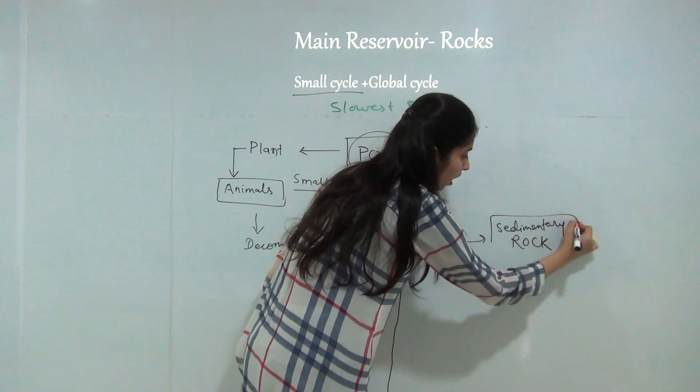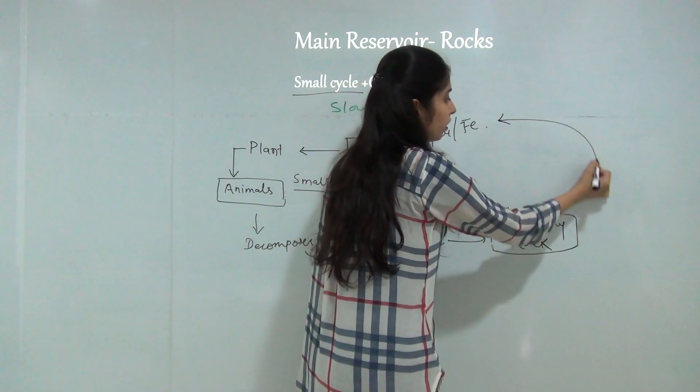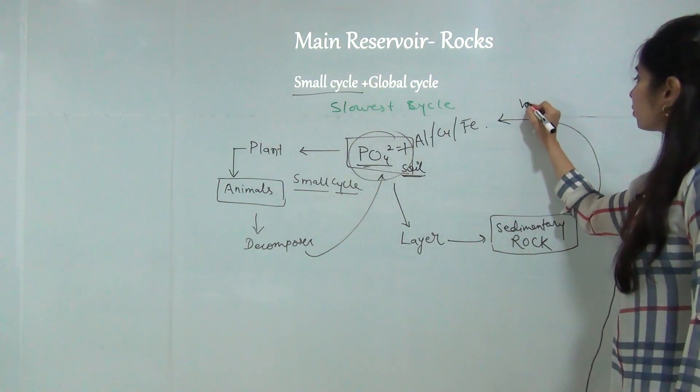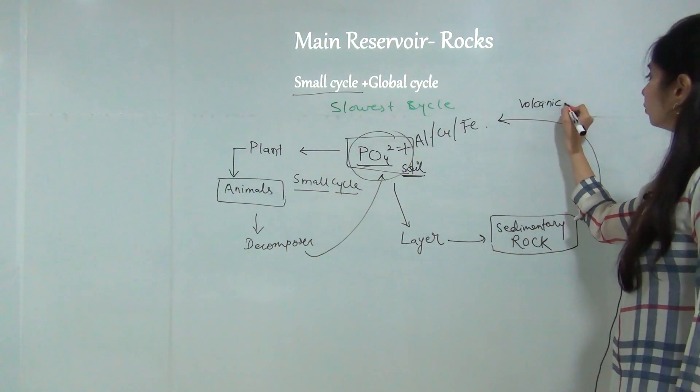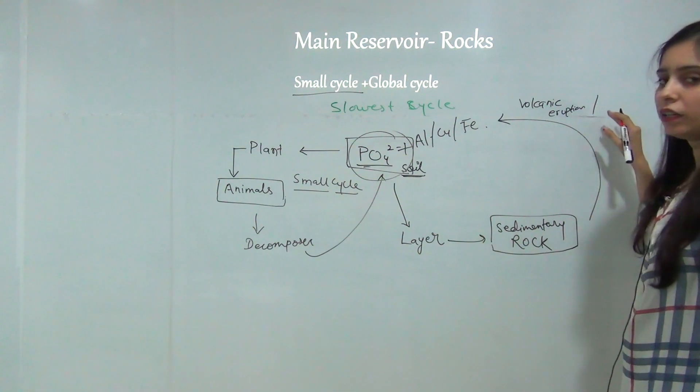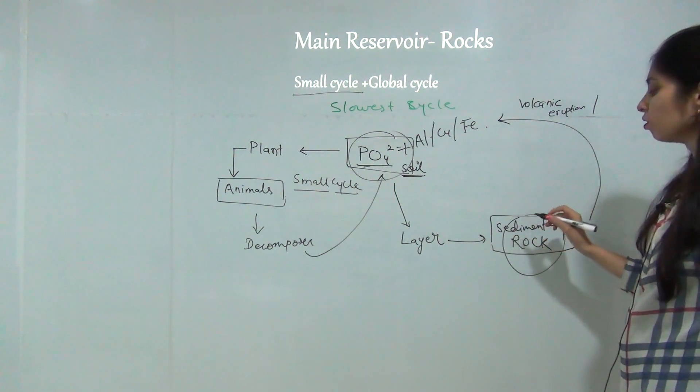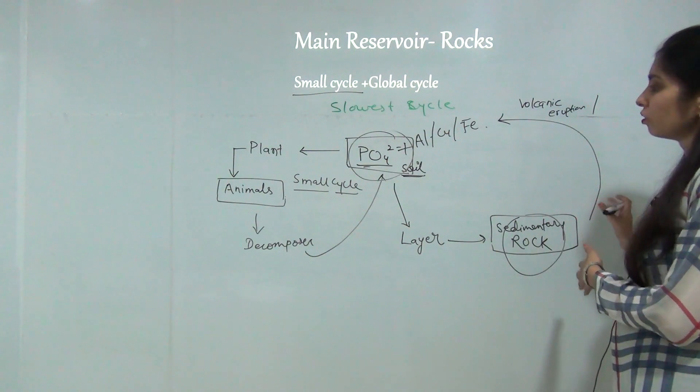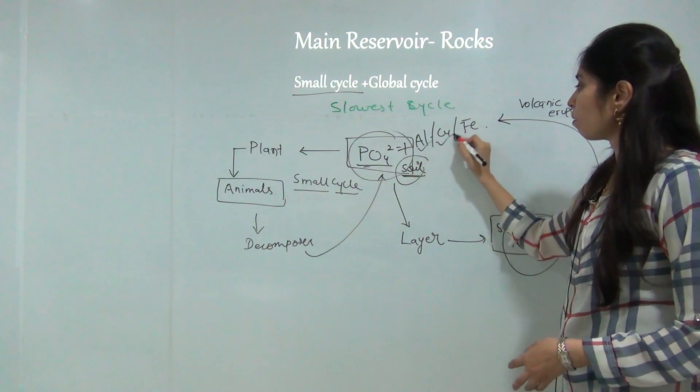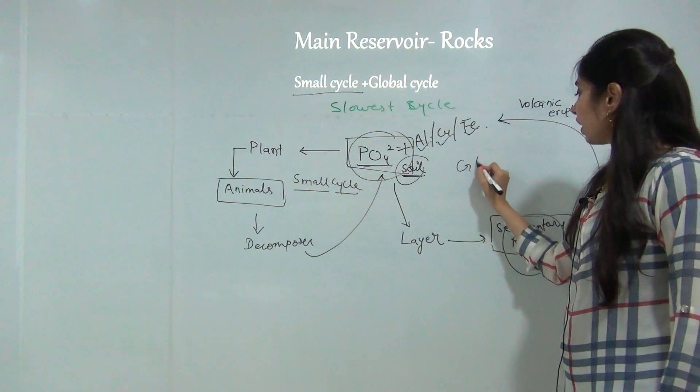These rocks, due to geological uplifting, break down. Geological uplifting means due to volcanic eruption, earthquakes, tsunami or weathering, in which the rocks can be broken down into small molecules and again phosphorus is found in the soil and aluminum, copper, ferrous are separated from the phosphate. This is the global cycle of phosphorus.